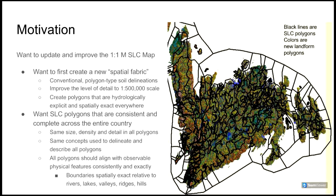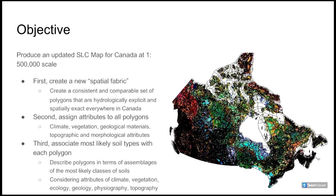Our initial motivation for this work was to investigate options for updating and improving the SLC map. We decided to first try to create a new and consistent spatial fabric to act as proto-polygons for a new SLC at 1:500,000 scale. We wanted particularly to aim to create polygons that were complete and consistent across the country and that aligned exactly with observable physical features, particularly hydrology.